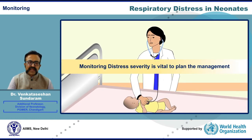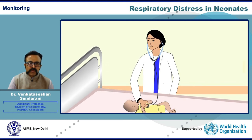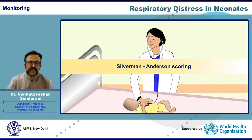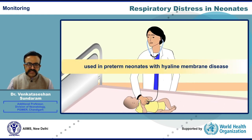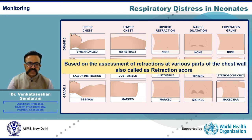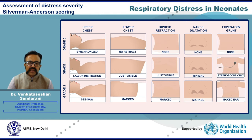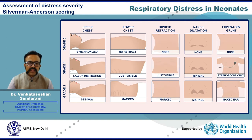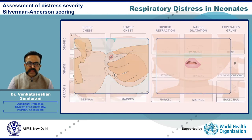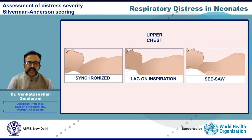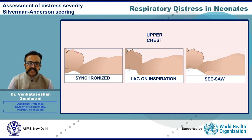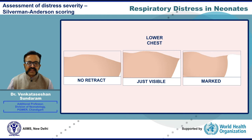Monitoring distress severity is vital to plan management. Two simple scores are useful: the Silverman-Anderson score, derived for use in preterm neonates with hyaline membrane disease, is predominantly based on assessment of retractions at various parts of the chest wall and is also called the retraction score. A score of four and above generally indicates need for respiratory support beyond mere oxygen. Importantly, 'upper chest' refers to whether the upper chest moves in synchrony with the abdomen during inspiration, not the level above the nipple.